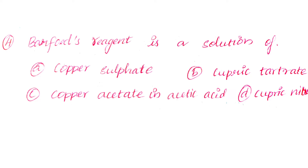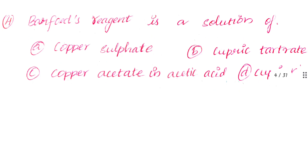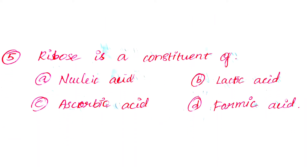Question number 5: Ribose is a constituent of. Option A: Nucleic acid. Option B: Lactic acid. Option C: Ascorbic acid. Option D: Formic acid. The answer is Option A: Nucleic acid.